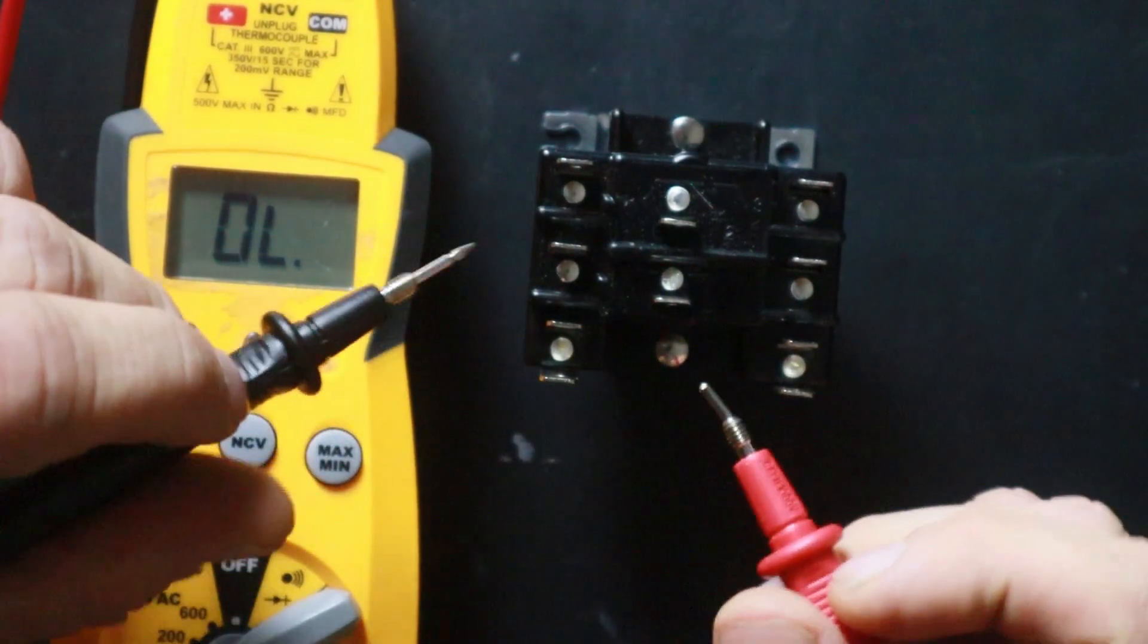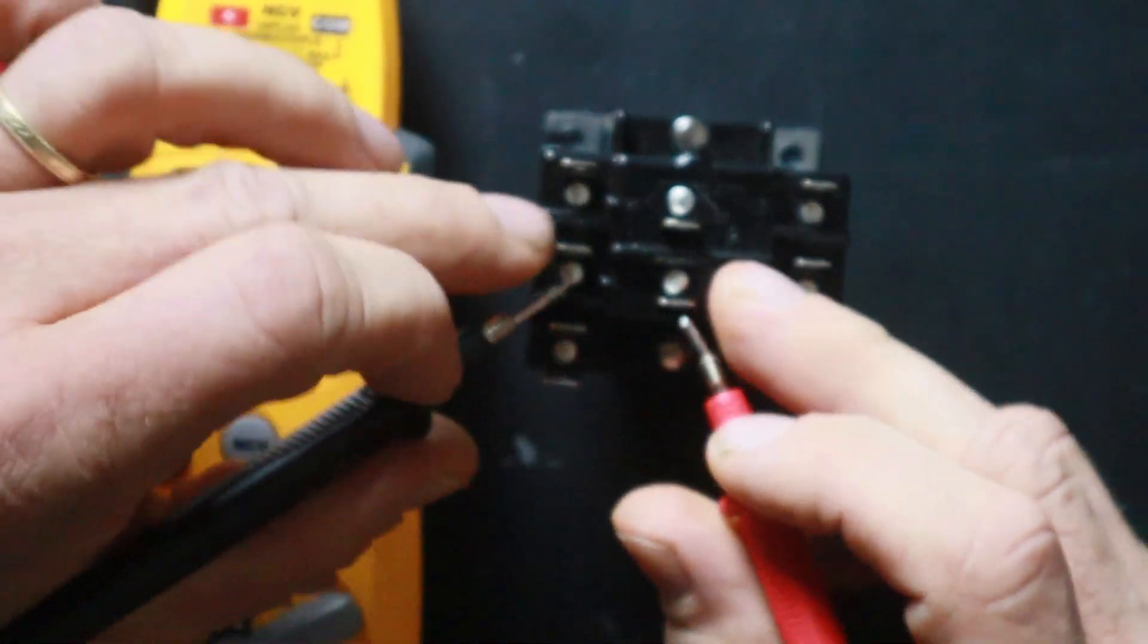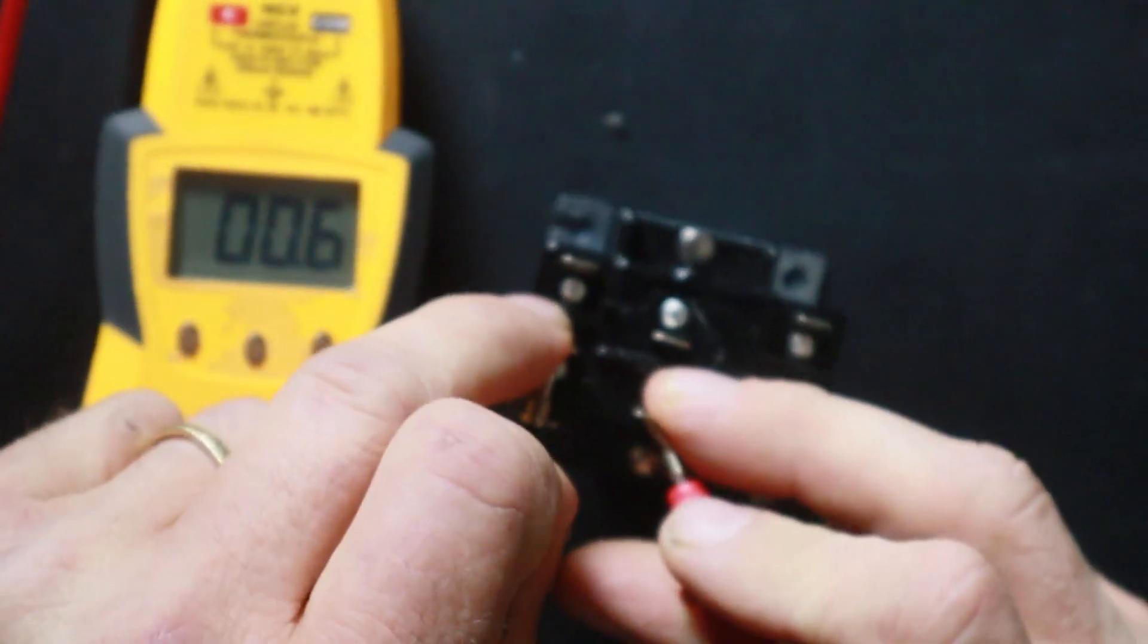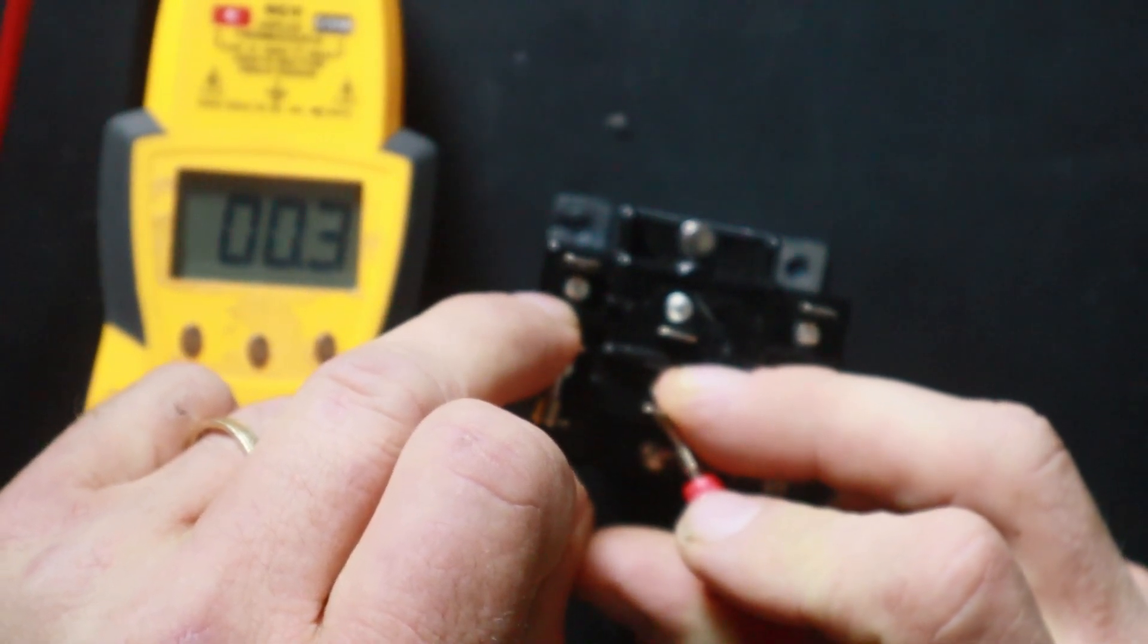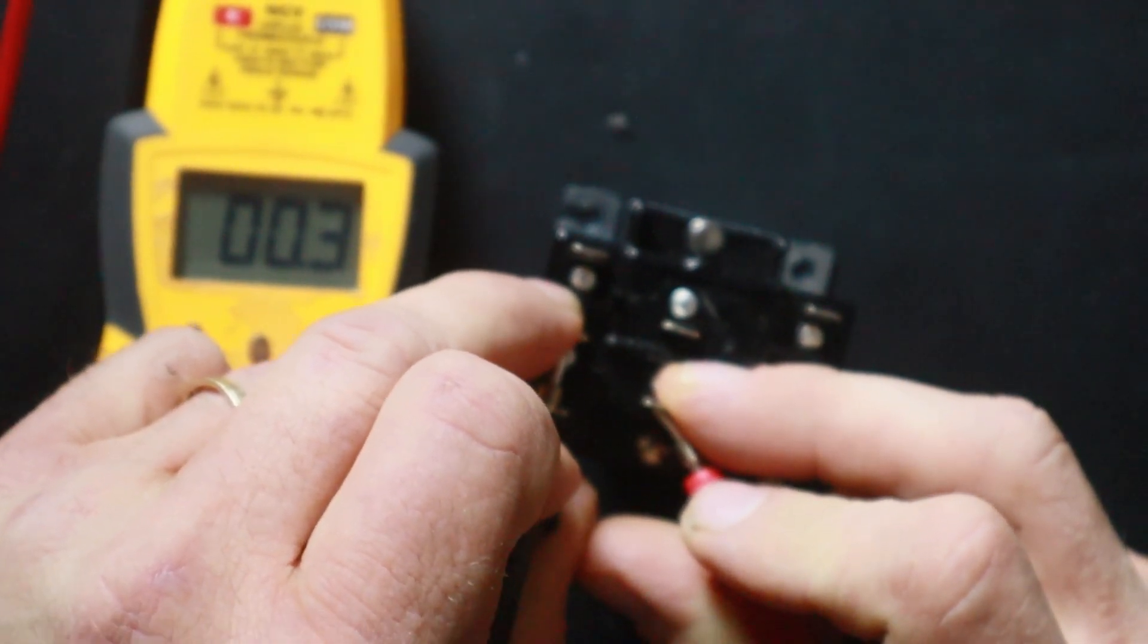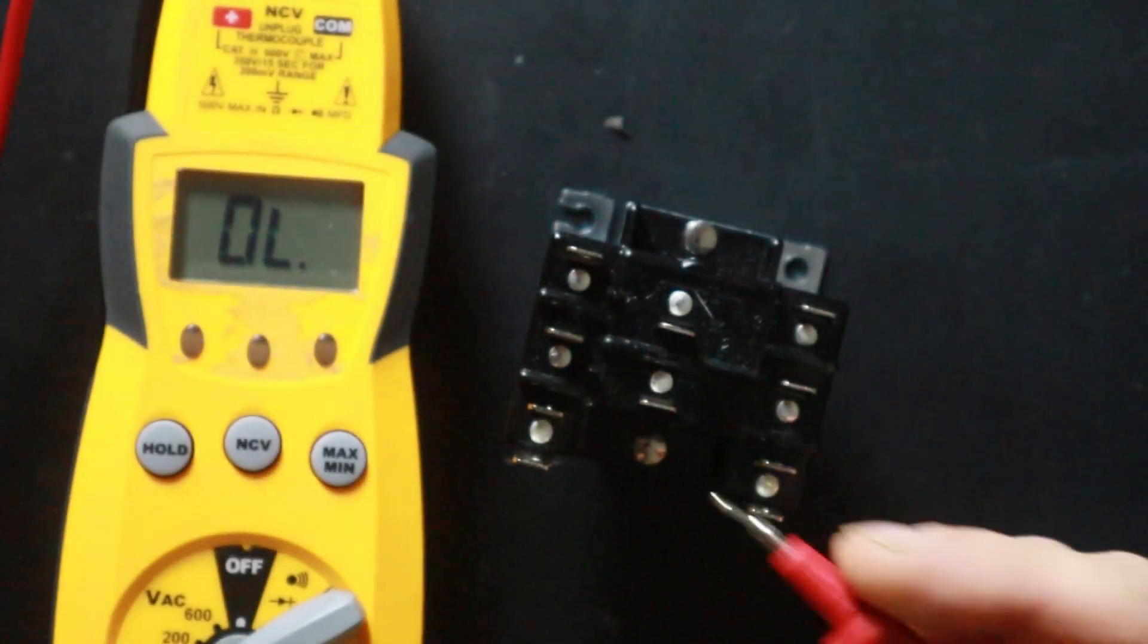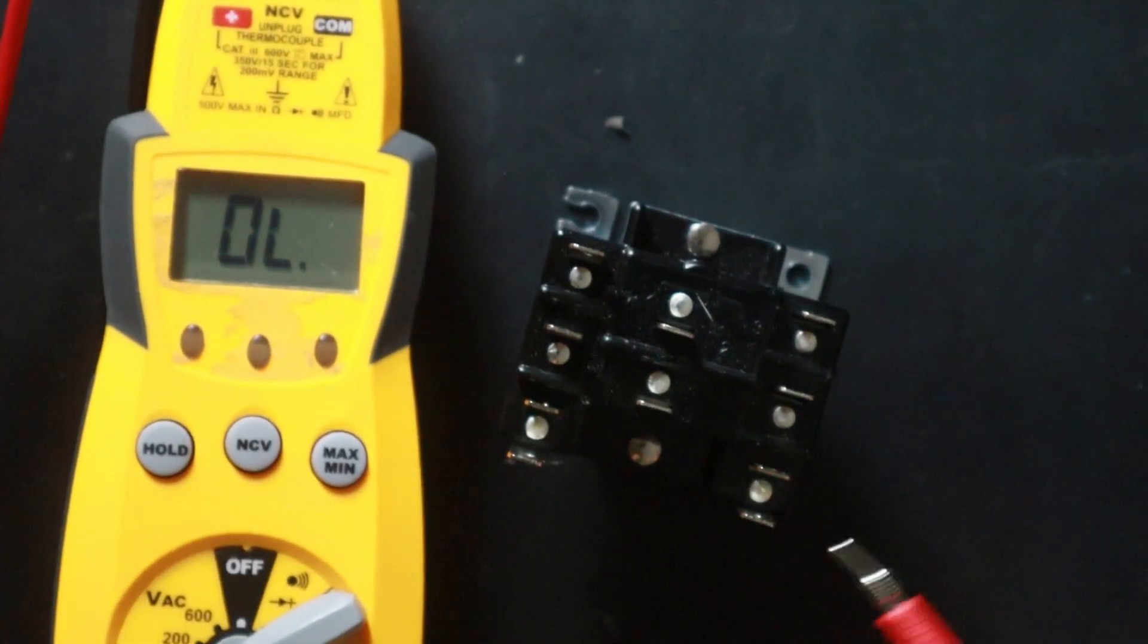Now, if I were to test, if I were to ohm out the terminals between the contacts, I'm going to get a much lower reading. So you could see there that I'm reading, what, 0.3. So obviously there's going to be a lot less resistance on contacts than on coils.